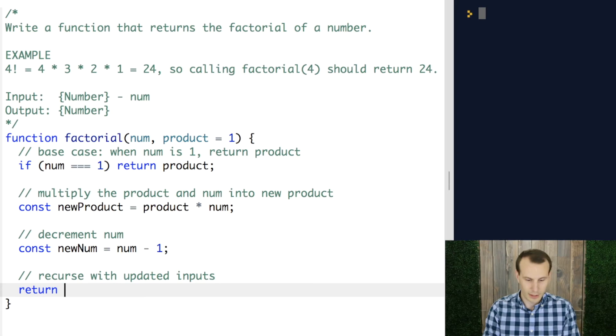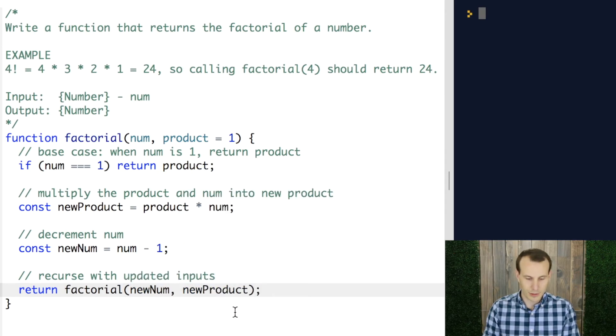So, with these inputs, if we go ahead and return the call to factorial with the new number and the new product, then this should give us the factorial that we desire.